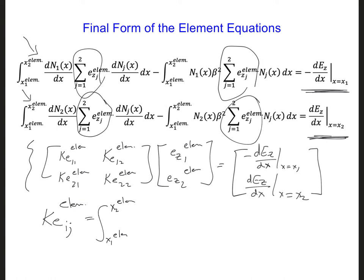And then inside we have dnix. So this is the spatial derivative of the interpolation function multiplied by the spatial interpolation function, but there's a j here instead of an i, and minus nix beta squared times njx dx.